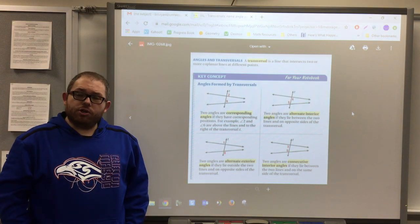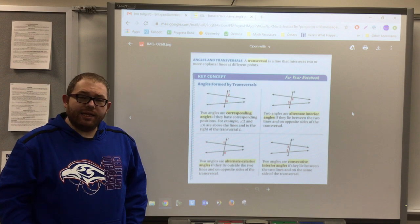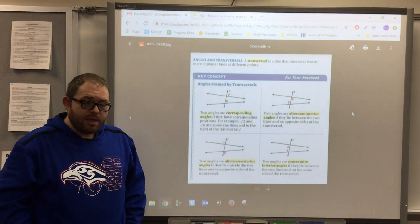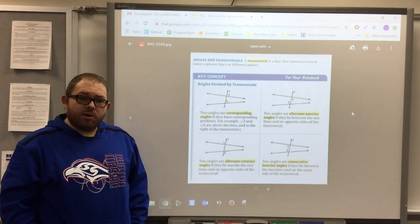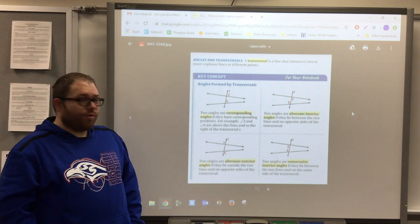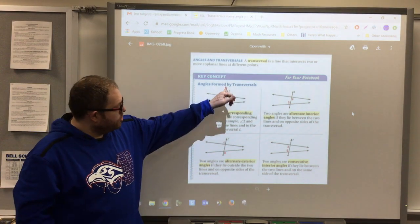These all occur when we have two lines in a diagram and then there's a third line called a transversal that goes through them.